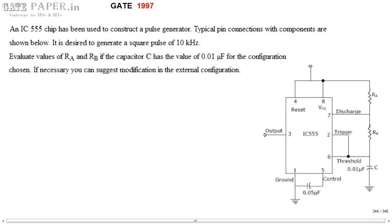We are discussing the Gate 1997 ECE paper. This question is related to enlarged circuits. An IC555 chip has been used to construct a pulse generator. Typical connections with components are shown in the diagram. It is desired to generate a square pulse of 10 kHz. Evaluate the values of RA and RB if the capacitor C has 0.01 microfarad. If necessary, suggest a modification in the external configuration to generate a square pulse of 10 kHz.